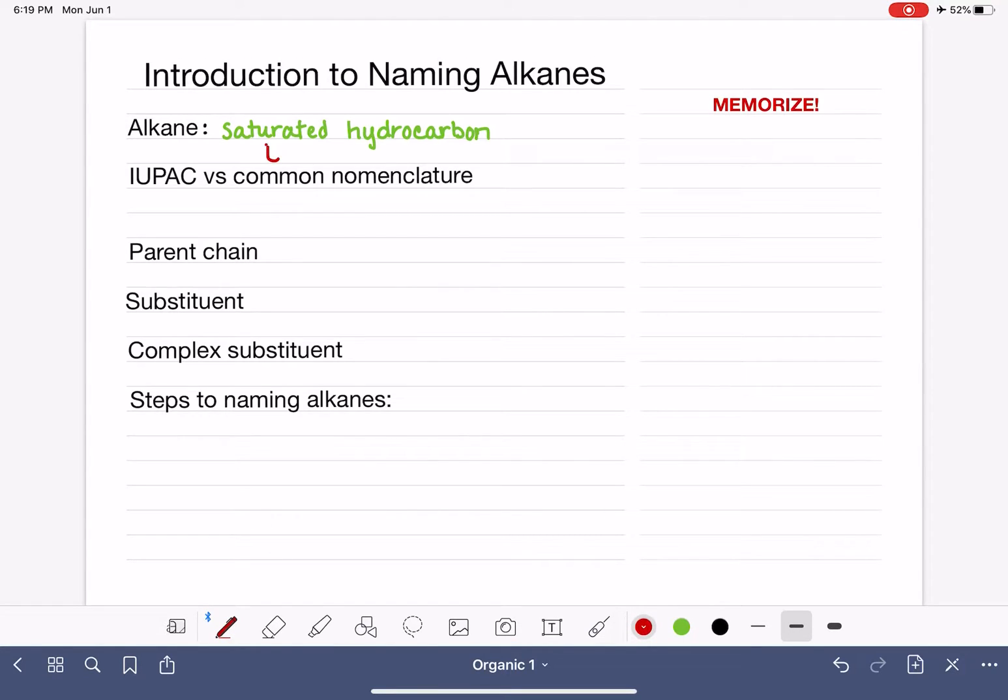But the saturated part, I think, is new. So that just means that it only contains single bonds. No double bonds, no triple bonds. Okay, so alkanes are saturated hydrocarbons having only single bonds.